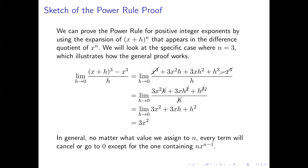To generalize this beyond the case where the exponent is 3 to a general exponent n, when you expand the binomial power, all the terms will either cancel or, when we let h approach 0, the remaining terms have a factor of h that becomes 0. The only thing we're left with is the term n times x to the power n minus 1, which is the derivative.